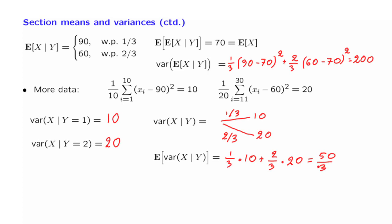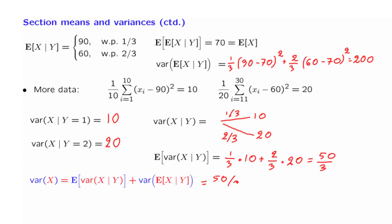At this point we have the two quantities that are necessary to apply the law of total variance. According to the law of total variance, the variance of the students' scores throughout the entire class is equal to 50 over 3 plus 200. And this is the overall variance.